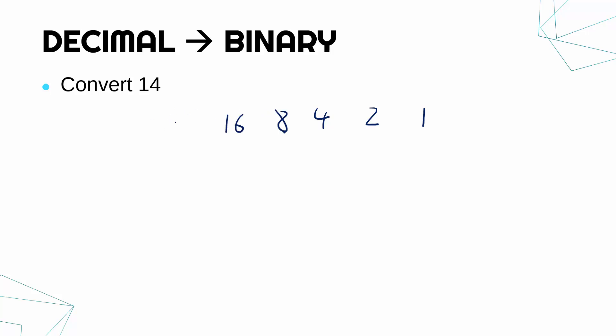And I can keep doubling forever, but actually what I should do in this method is stop when I reach a number bigger than my target number. So because 16 is bigger than 14, I do not need 16 in my table. It would just be a zero. So you always stop just before the next column is going to be bigger than your number. So I just need one, two, four, and eight in this example.